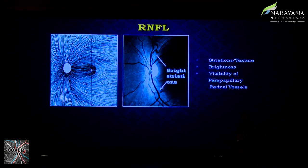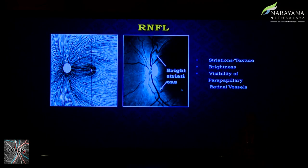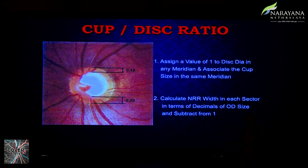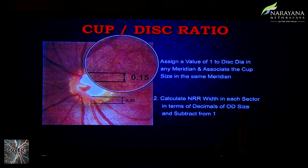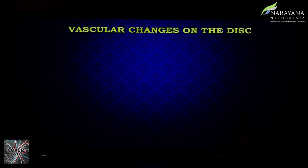To examine the RNFL, follow the anatomical distribution of the nerve. The bright silvery striations along the nerve distribution are significant, and you may see both diffuse and localized RNFL losses. For cup-disc ratio calculation: assign one to the disc, then measure the inferior rim and superior rim — for example, 0.20 plus 0.15 equals 0.35, subtracted from one, gives a CDR of 0.65.